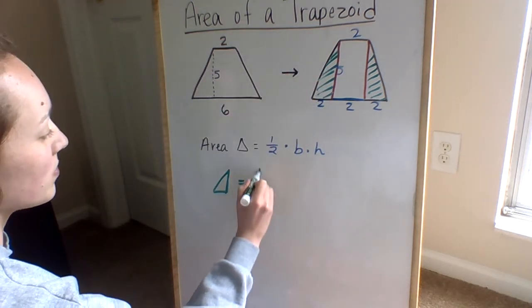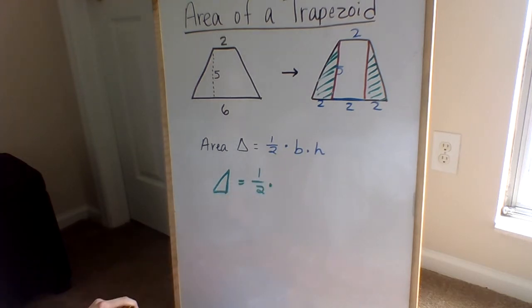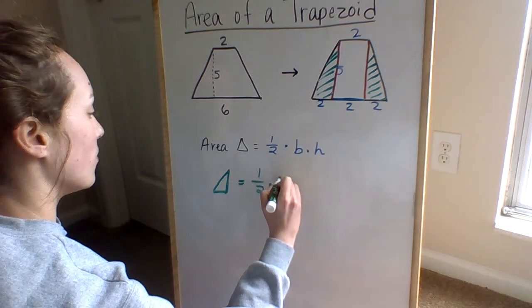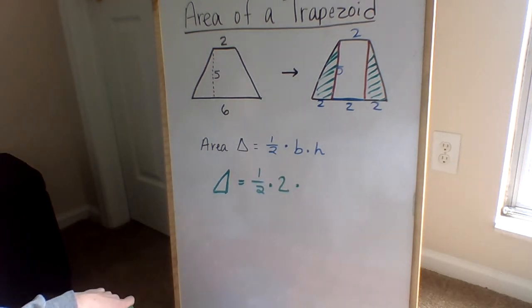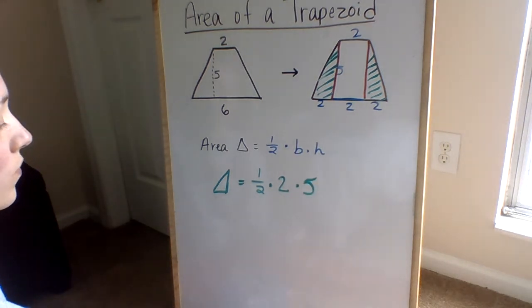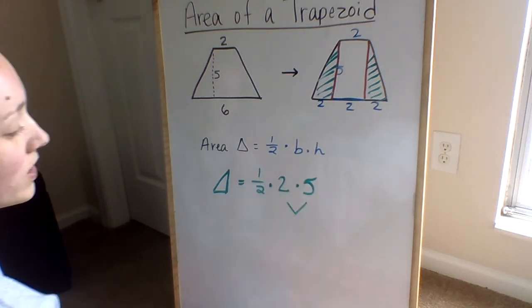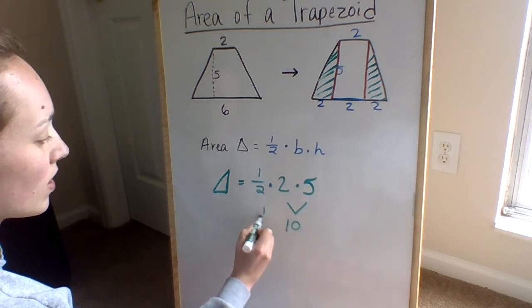So the area is going to be one half. What is our base of our triangle? Good, it's two. What is the height of our triangle? Good, it's five. So what is two times five? Good, it's ten.